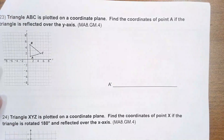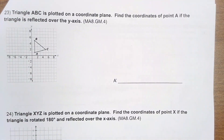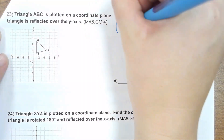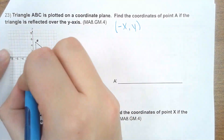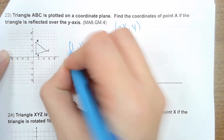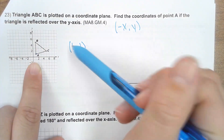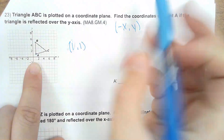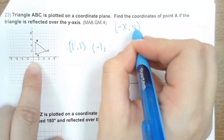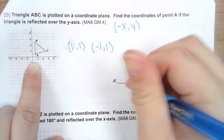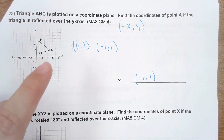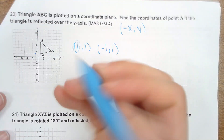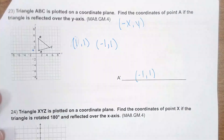Same triangle — find the coordinates of point A if it's reflected over the y-axis. The rule for reflecting over the y-axis is you multiply your x coordinate by −1. Point A is currently at (1, 1). Multiplying x by −1 gives −1, and we keep the y value. So A prime is going to end up at (−1, 1). You can double check that it looks like a mirrored image when reflected over the y-axis.